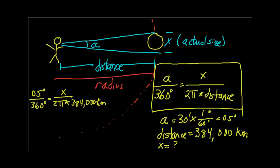Cross multiplying, or really just multiplying both sides by this bottom part, we also notice that the degrees cancels with degrees and the answer is going to come out in kilometers. That's always a good check to know that the units work out. Then we have x is equal to 0.5 over 360 times 2π times 384,000 kilometers, and this gets us about 3400 kilometers.